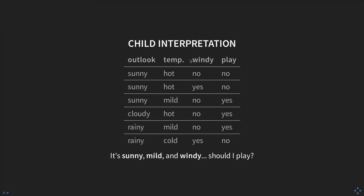Let's look at a very basic interpretation of the weather through the eyes of a child. We have a table with several attributes: the outlook — what does the weather look like — temperature (hot, mild, or cold), whether it's windy (yes or no), and the objective: can the kid play outside, yes or no? In certain conditions it might be sunny and hot but not too windy, and the kid decides not to play. Another example: it's cloudy, hot, not windy, so the kid decides to play outside.